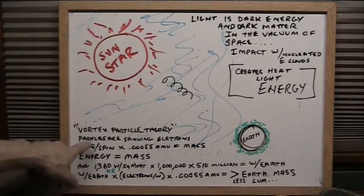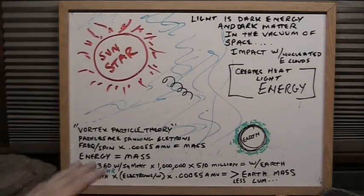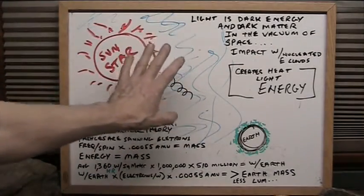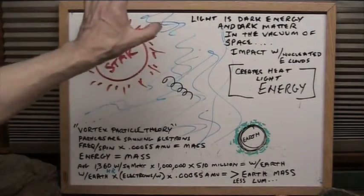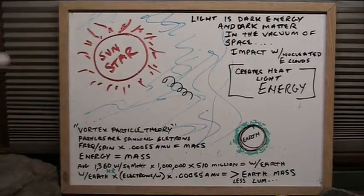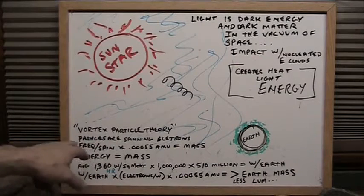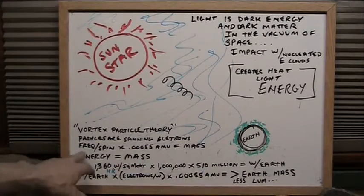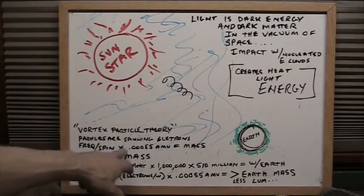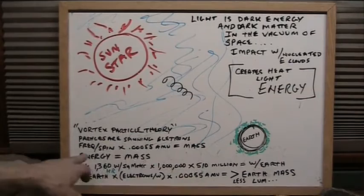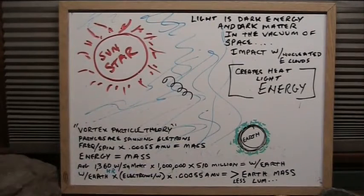Depending upon the frequency, that creates the angular momentum, which creates the mass. So here's the deal. You've got particles or spinning electrons. No nuclear bits at all, and that's why you don't see them. The frequency of the spin times their resting weight equals the mass. The energy equals the mass.